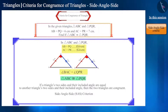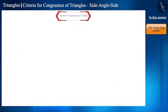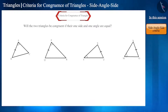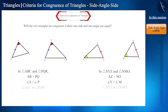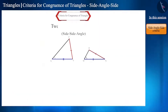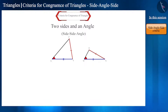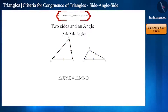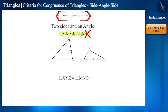Can two triangles be congruent with lesser conditions? For example, one side and one angle of two triangles are equal — the triangles are not congruent by just having one equal side and one equal angle. Apart from SAS, are two triangles congruent by the SSA rule, wherein two sides and one angle not included between these sides are equal? By looking at the figure, we can tell that these two triangles are not congruent. Therefore, SSA cannot be accepted as the test for the congruence of triangles.